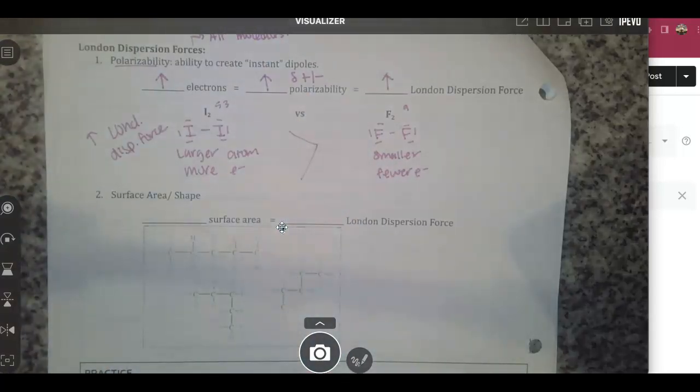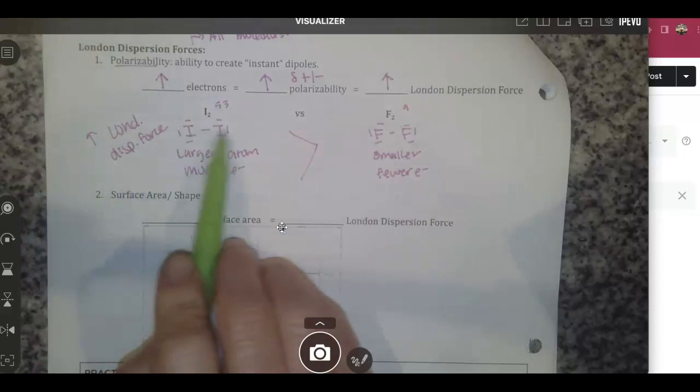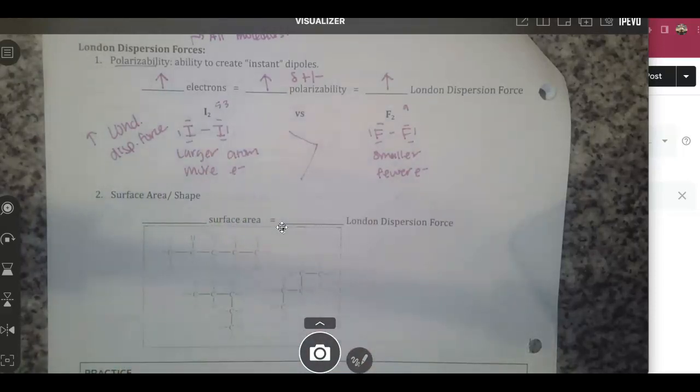That also means a couple other things. It's going to have a greater melting point and a greater boiling point because there are more forces keeping those two iodines attracted to another set of iodines.